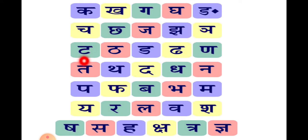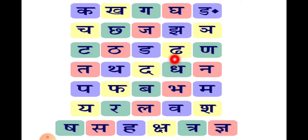तीसरा वर्ग — ट से टमातर। ठ से ठठेरा। ड से डमरू। ढ से ढकन। और ण — ण से कोई वर्ड नहीं है।